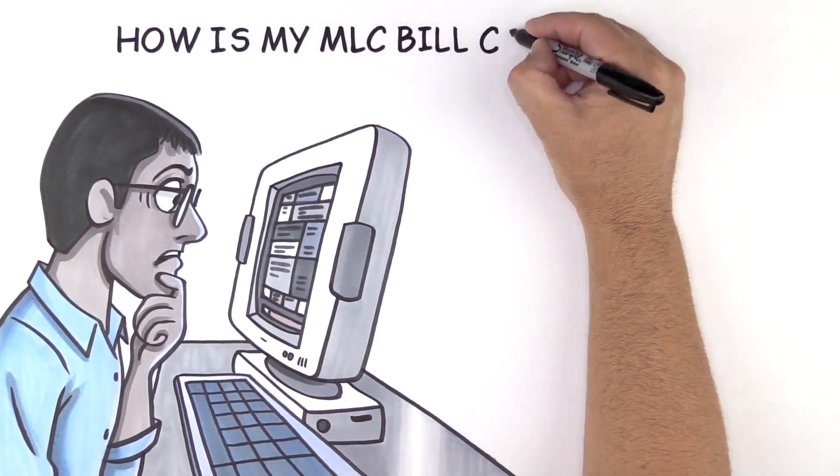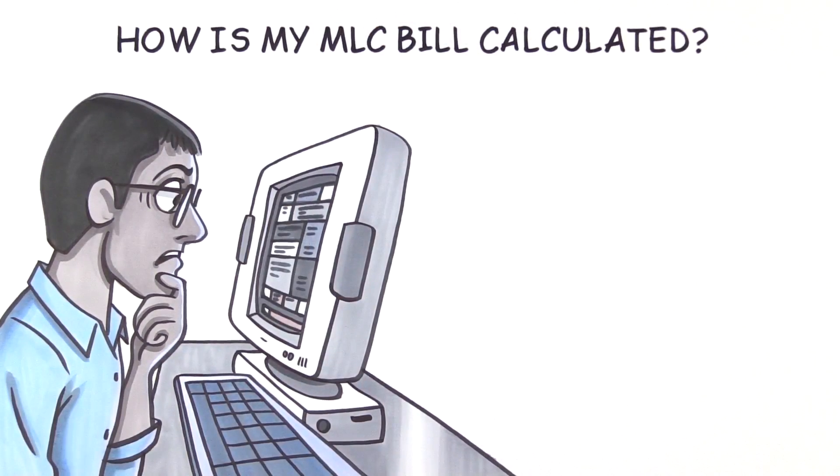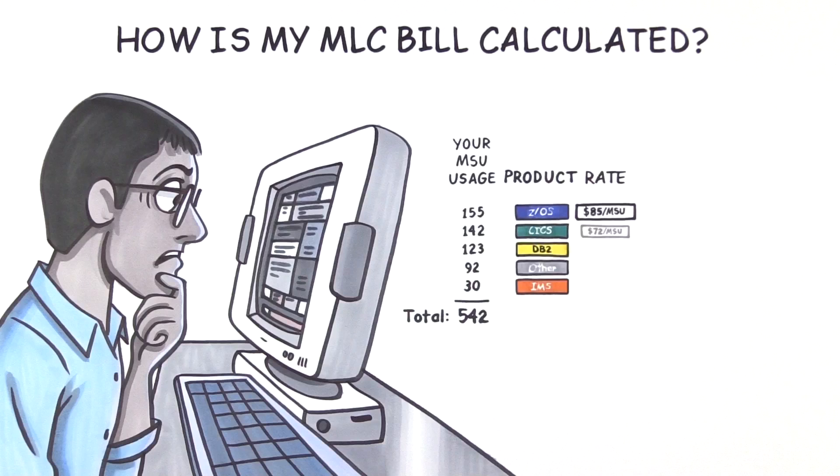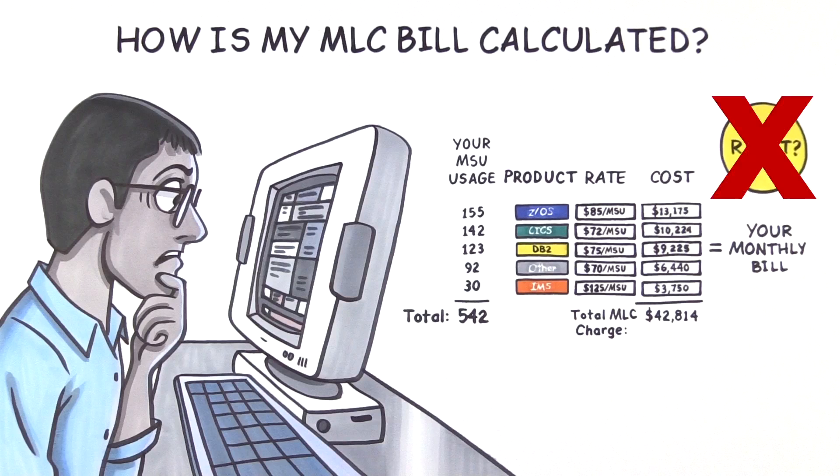Many people think they are charged for what they're actually using. If this were true, your bill would be calculated like this. Take the usage for each product in your peak and multiply it by the price of that product. The total equals your monthly bill. But this is not how your bill is calculated.